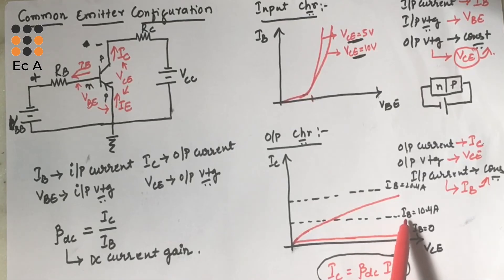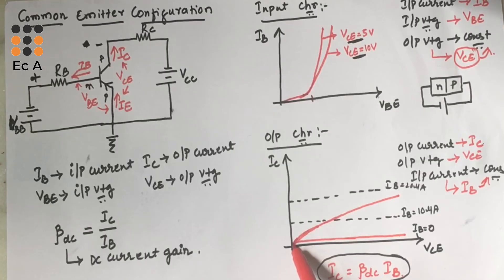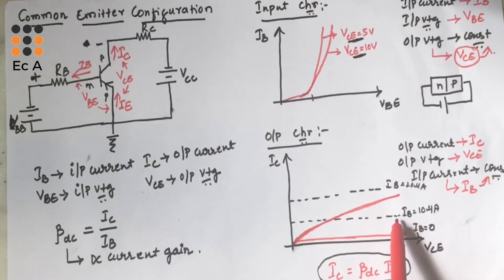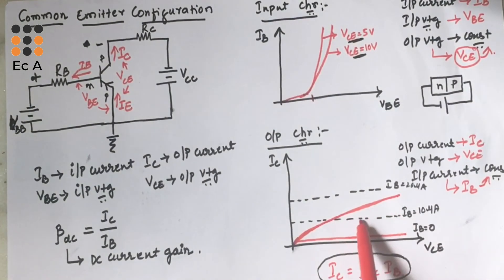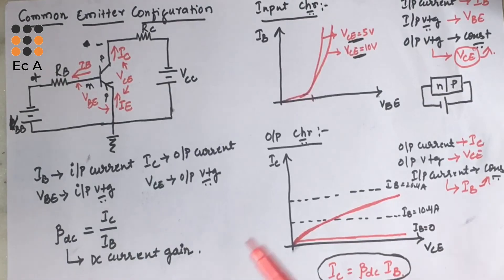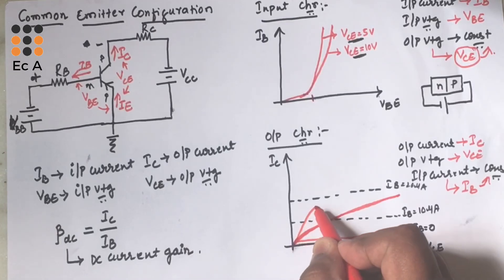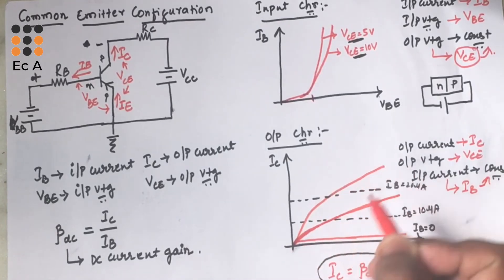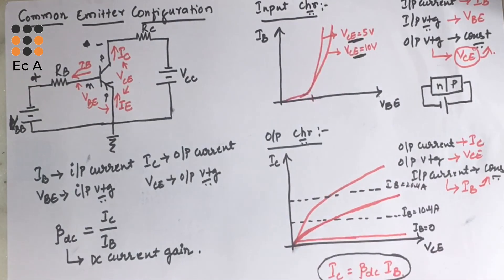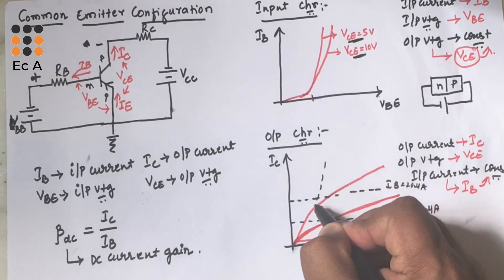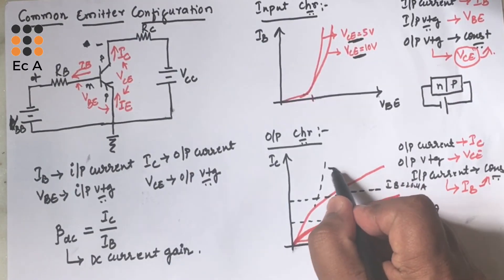Now let us increase IB to 10 microamperes. A small variation in base current causes a large variation in collector current. Initially the output current is small, then it increases significantly — showing large variation in collector current for a small input variation. Increasing IB to 20 microamperes again gives a current greater than the input current. The region where we observe these characteristics is called the active region.